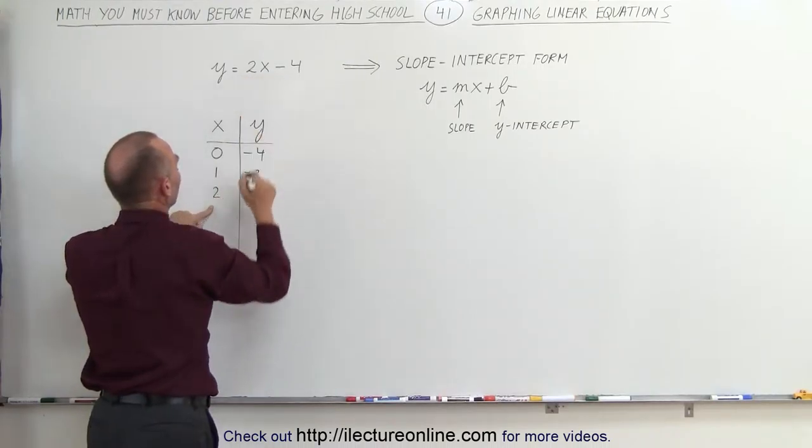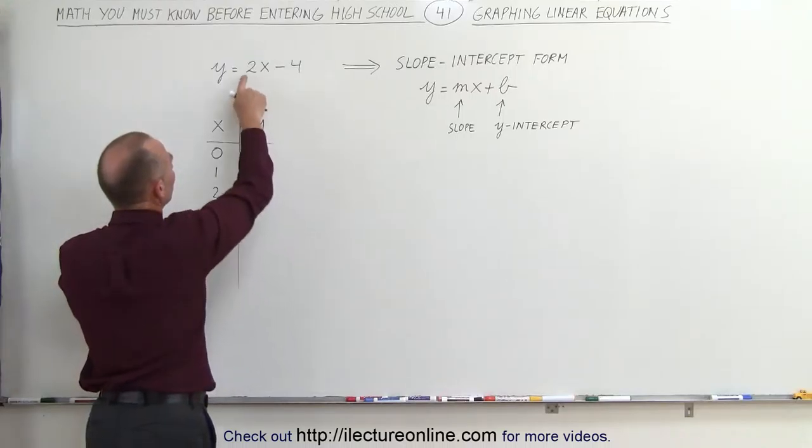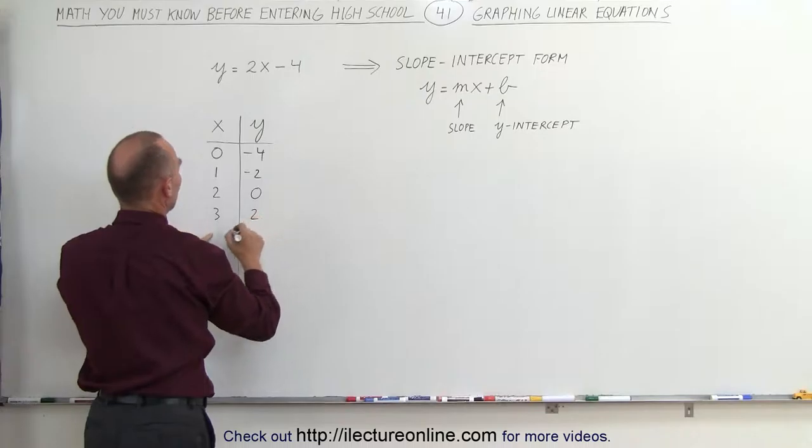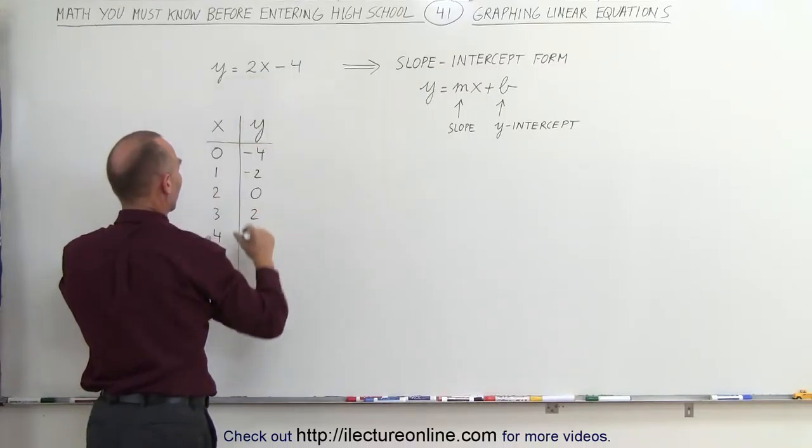When I plug in the value of 3, 2 times 3 is 6 minus 4, gives me 2. When I plug in the value for 4, 2 times 4 is 8 minus 4, which is 4.